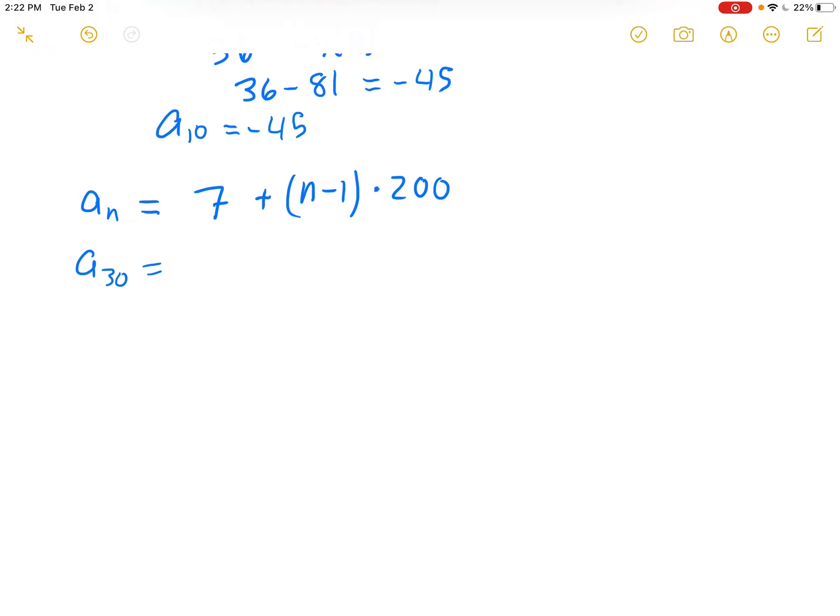So we'd get 7 plus 30 minus 1 times 200. 30 minus 1 is 29 times 200. We've got to do the multiplication before the addition, according to the order of operations, which will give us 5,800. And our final answer will be 5,800 plus 7, giving us A of 30 is equal to 5,807.